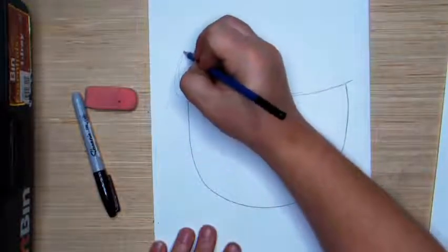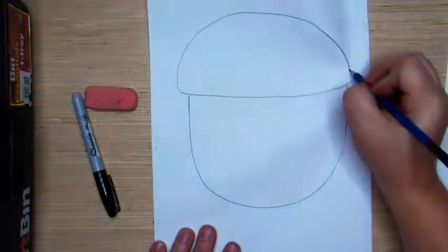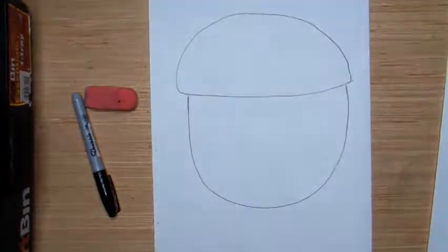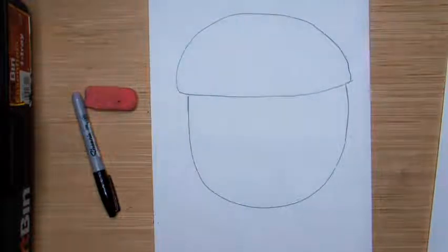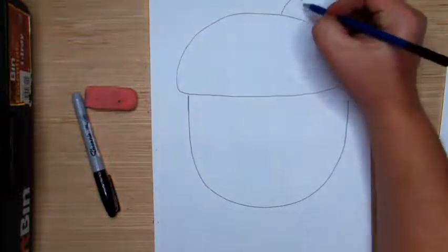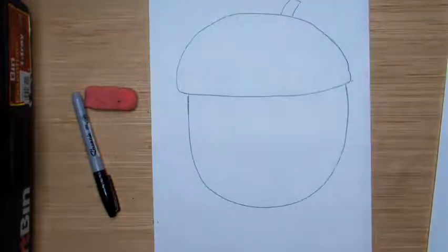Next, we are going to add a nice big curved line on top that is going to wrap all the way around. Just like that. It is almost like the acorn is wearing a hat. And I am just going to add two lines here for the little top part of the acorn.